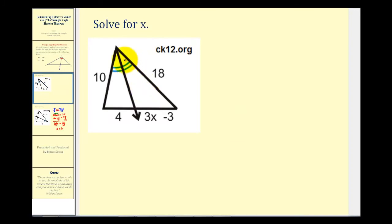Again we have the same situation. We have an angle bisector of this angle here, so it divides this side of the triangle so it is proportional to the other two sides of the triangle. So the ratio of 4 to 3X minus 3 must equal the ratio of 10 to 18.